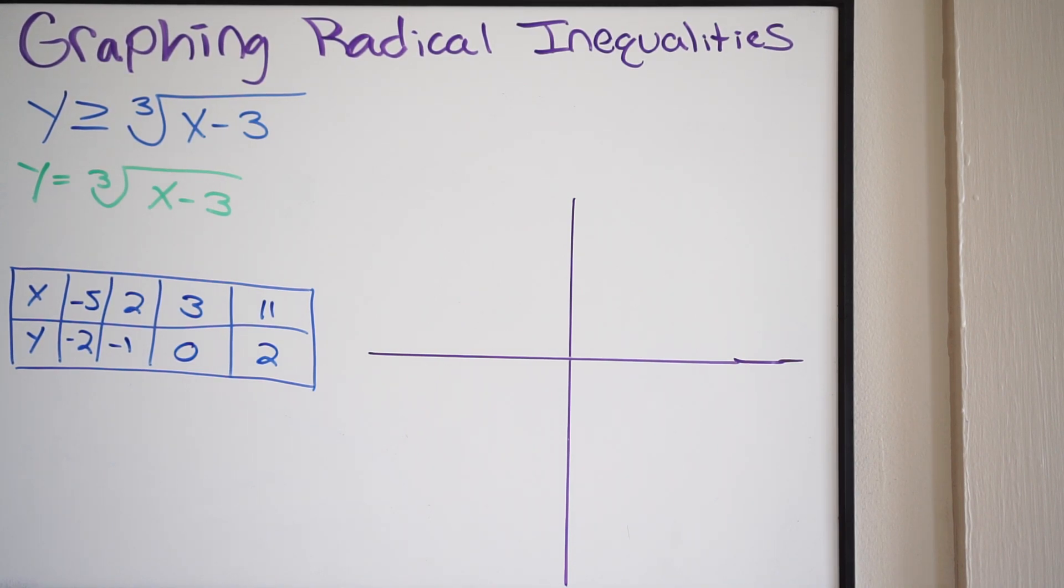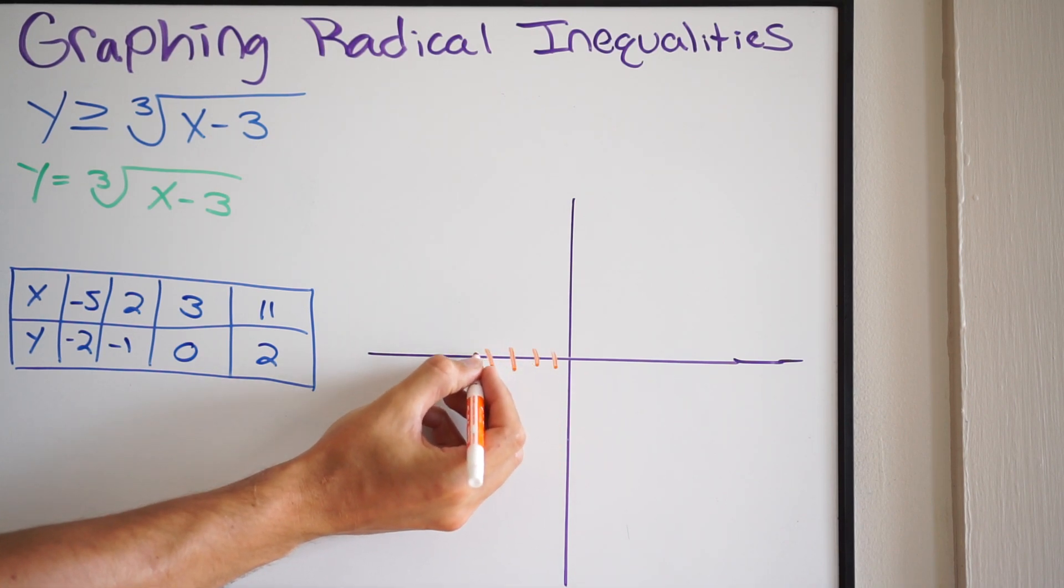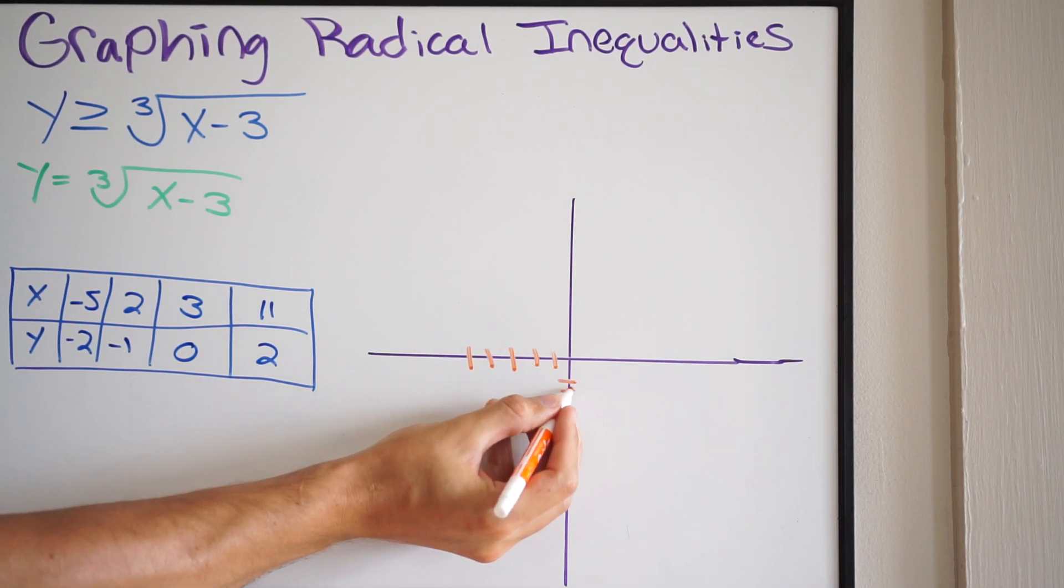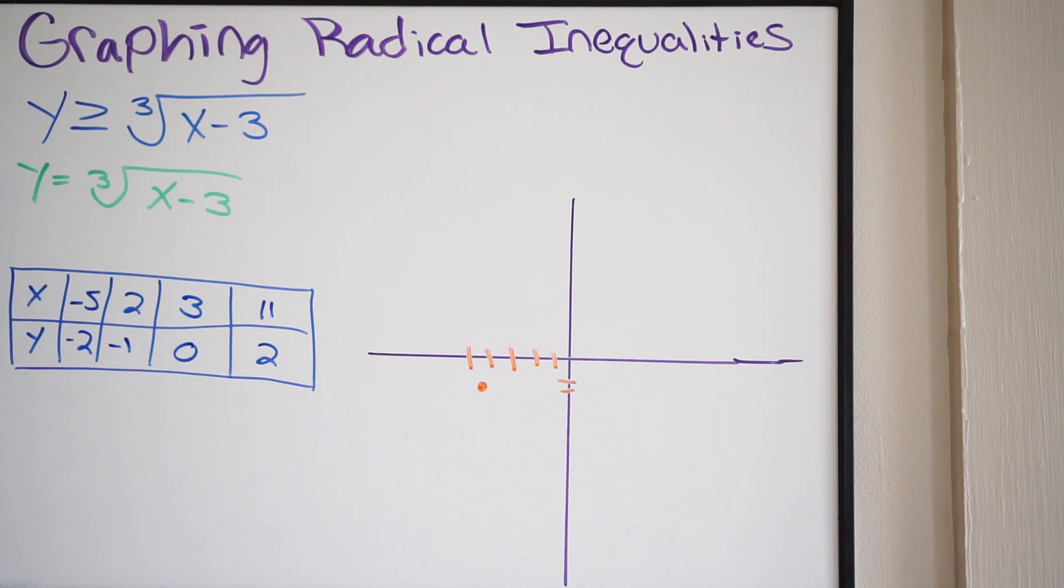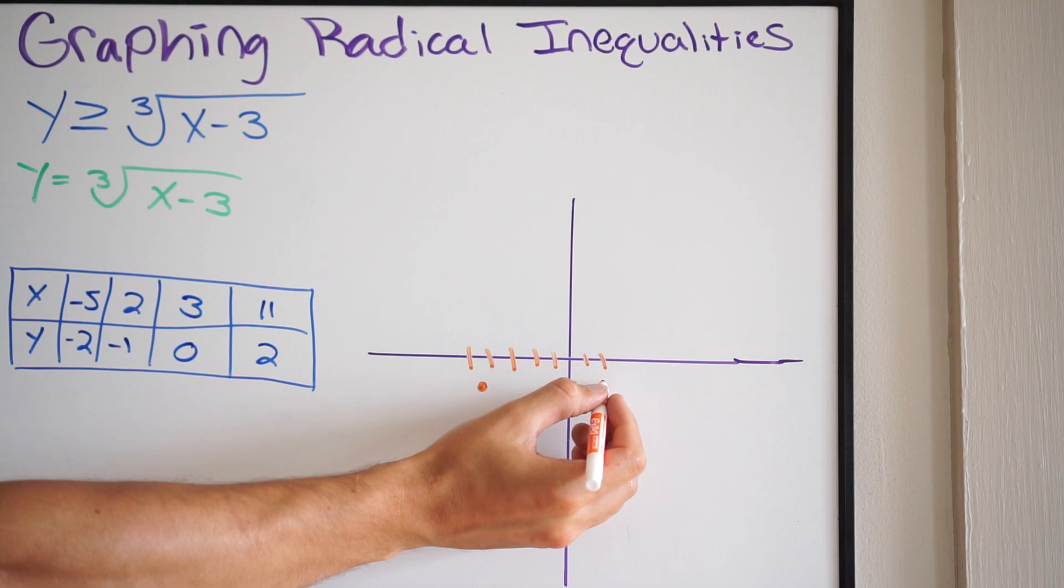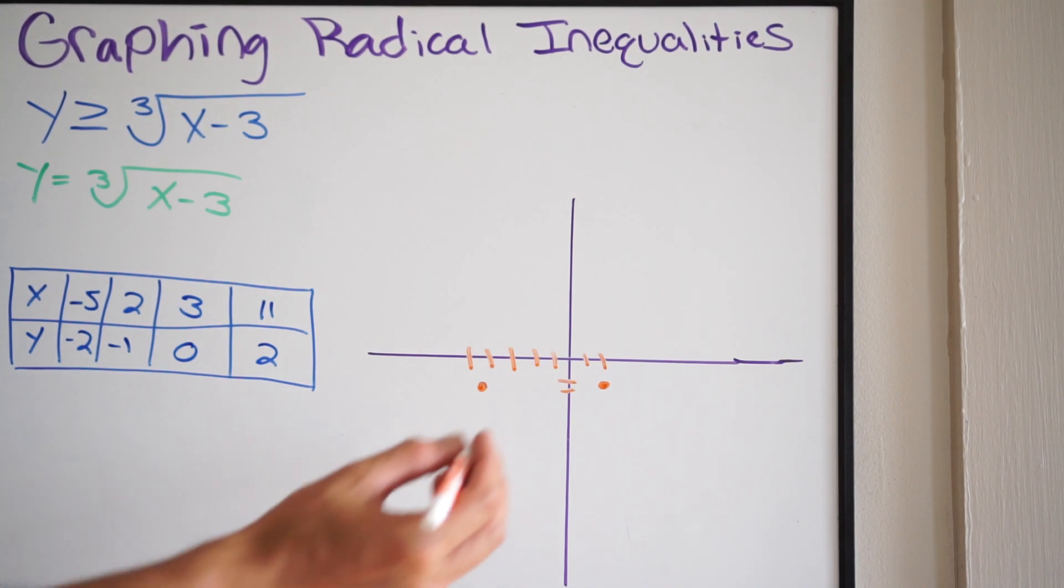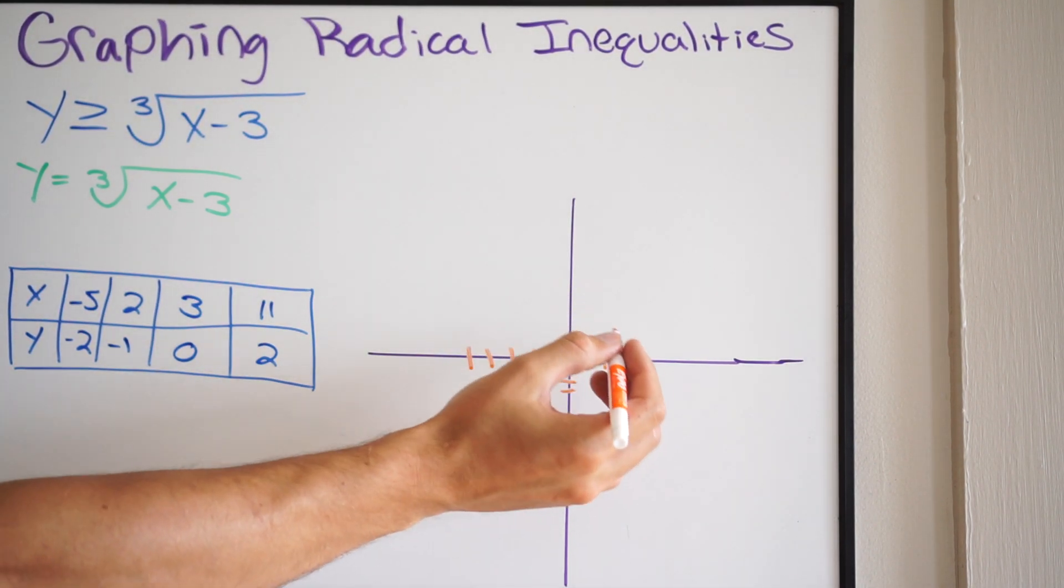So let's go ahead and do that. So making our graph, and let's do it in another color. So we're going to go over negative 5. So 1, 2, 3, 4, 5. And then down 2, 1, 2, make a point. Alright. Then we're going to go over 2. 1, 2. And then down 1. So right about here.